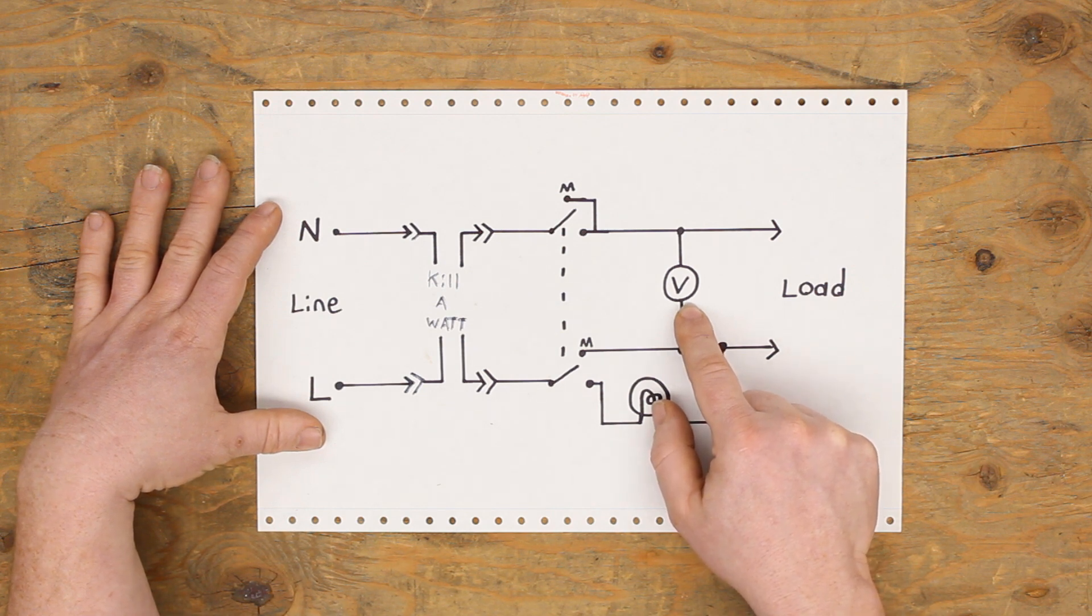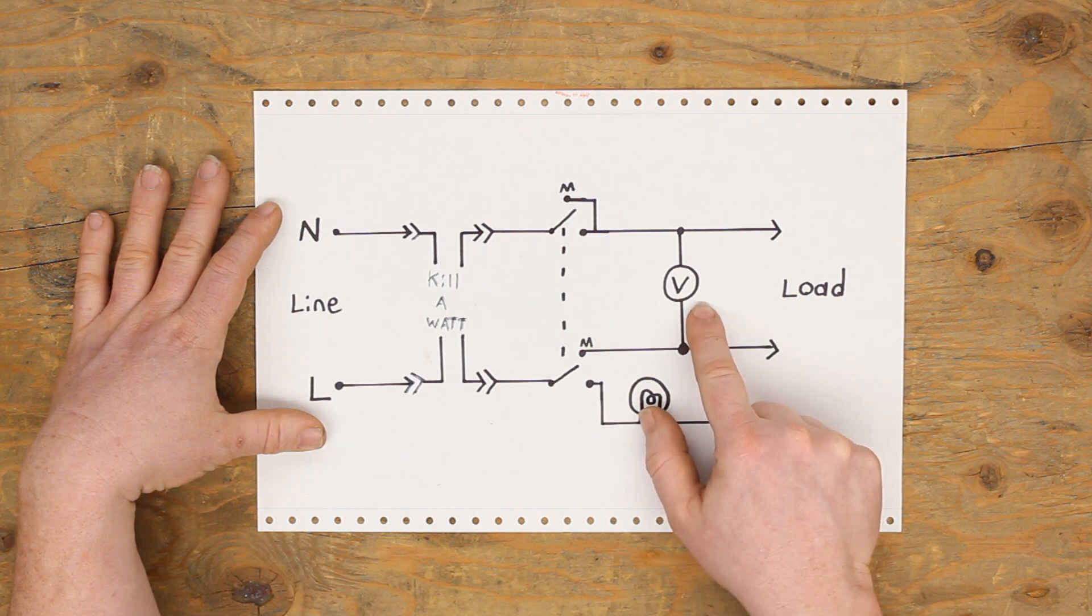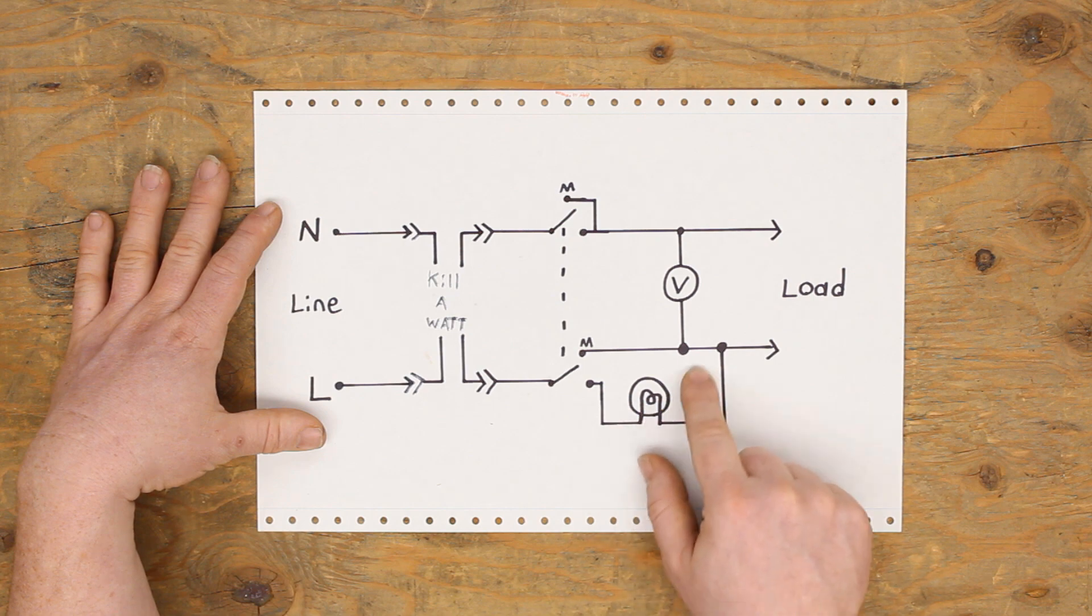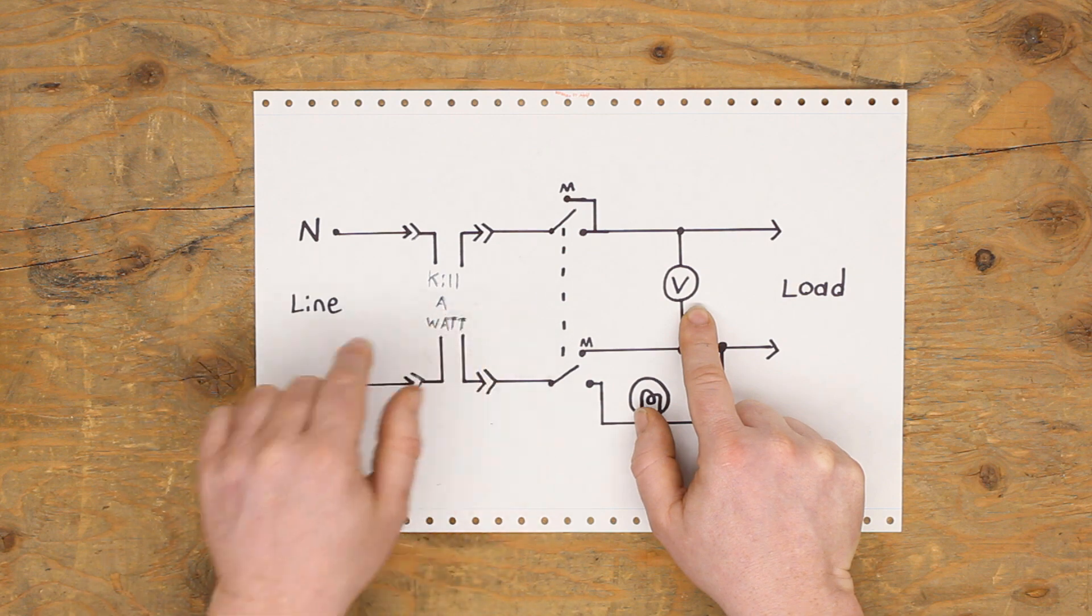And our volt meter is living right here, so it doesn't matter which position the switch is in, it'll always show me that voltage. So, that's why, also, when you see that your incandescent bulb is beginning to glow, you'll see a reduction in your voltage over here, because as it basically current limits, you'll see your voltage go down. The kilowatt wouldn't see any of this at all.